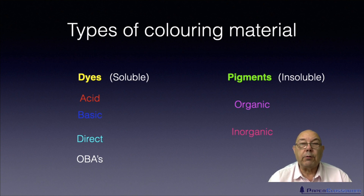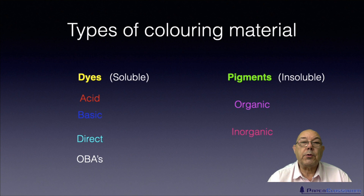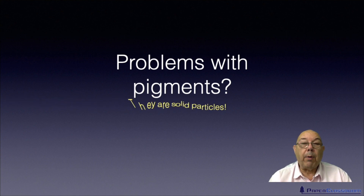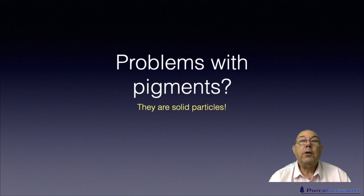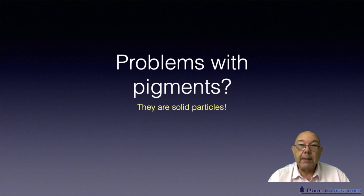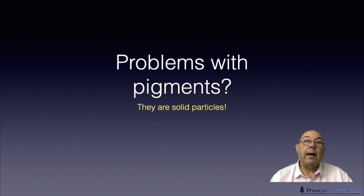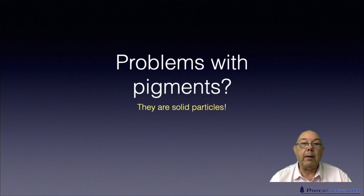They're sold as dispersions simply to reduce local environmental pollution, because of all the dust that you would create when doing the dispersion in the mill. So very often they'll be sold as pre-dispersed. What are the problems of pigments? Other than dusting, the one main problem is the fact that they're solid particles. Because they're solid particles, they behave just like a filler. The more filler you put into the sheet, the more it will interfere with fibre-fibre bonding, creating gaps, and the weaker the sheet. So the more pigment you put in your paper, the more you will interfere with fibre-fibre bonding and the weaker your sheet will go.